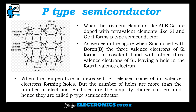Next, we will see about P-type semiconductor. When trivalent elements like aluminum, boron, or gallium are doped with tetravalent elements like silicon and germanium, it forms a P-type semiconductor. As we see in the figure, when silicon is doped with boron, the 3 valence electrons of boron form covalent bonds with the other 3 silicon atoms, leaving a hole.